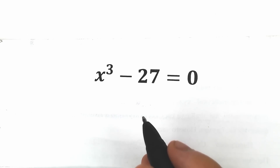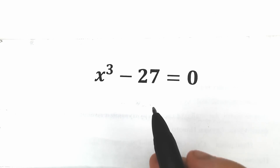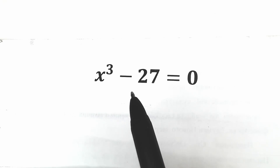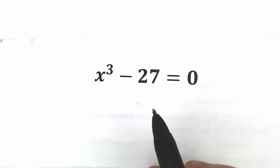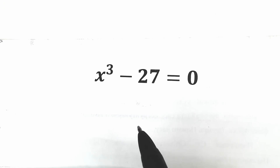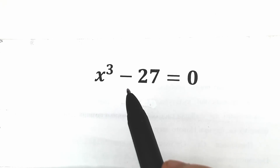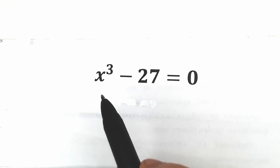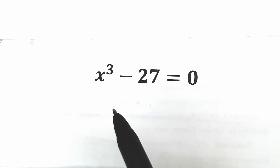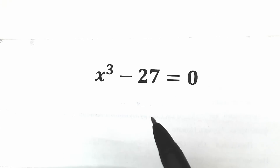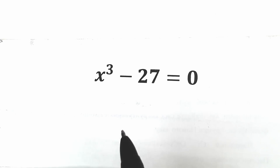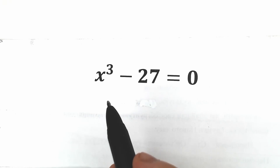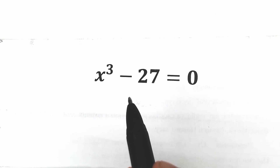Hello everyone! Happy to see you here. Today we have a really interesting algebra question: x cubed minus 27 equals 0. A lot of students might say, hey, this is easy because x cubed equals 27 and x equals 3, and then move to the next question. But this is not a good approach in terms of math — we need to find the correct approach to solve this problem.